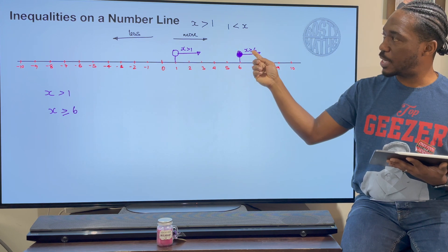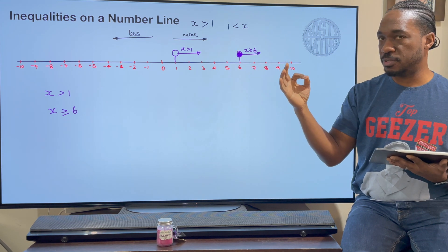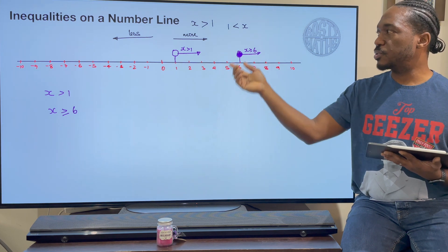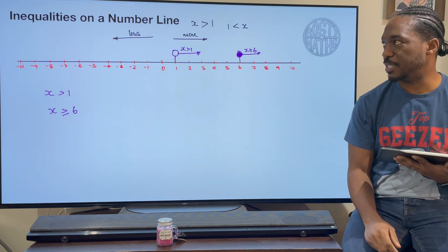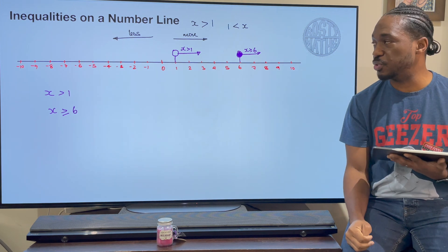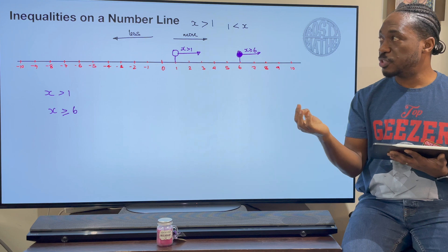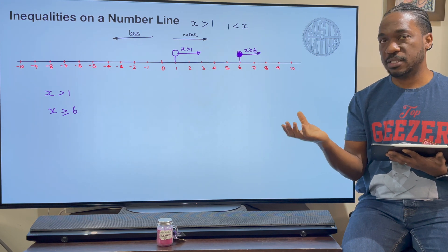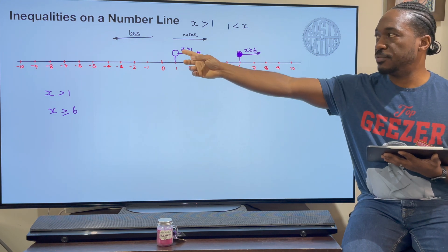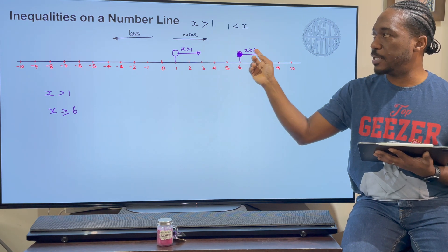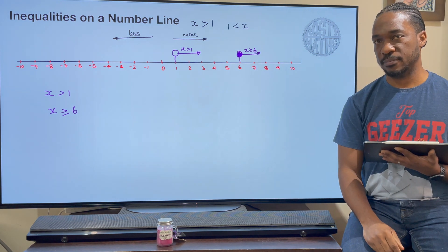Why is this one open and why is this one colored in? Well, the reason is because an open one means that it is not equal to 1. So if x is greater than 1, it means we'll start at 2. So all the numbers that satisfy this would be 2, 3, 4, 5, all the way to infinity except they tell you where to stop. But this one, when it says greater than or equal to, that little line under there means equal to as well. So that means it includes 6. So 6, 7, 8, 9, 10, and then you go to infinity or wherever they ask you to stop.